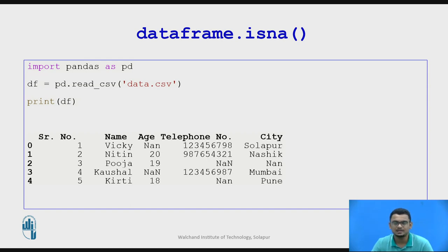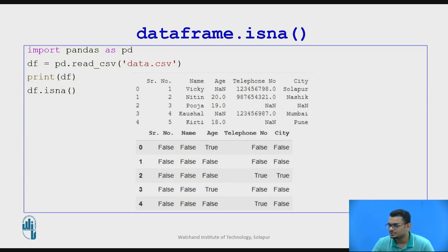Many times it may happen that when you are entering data into a database, say for example you do not have a landline telephone number, so you do not enter anything in that field and that goes missing. We need some measure to handle this missing data, and that is how the isna method helps us. When I execute DF.isna(), this is the output I get — everywhere that I am getting True is the place where there is a missing value.